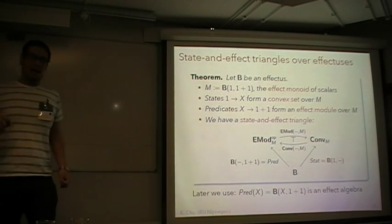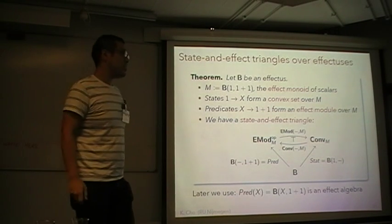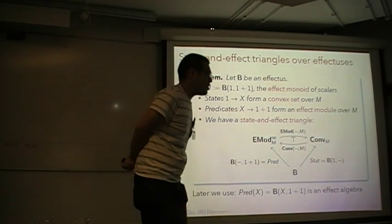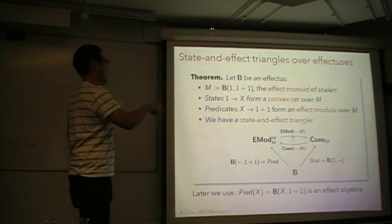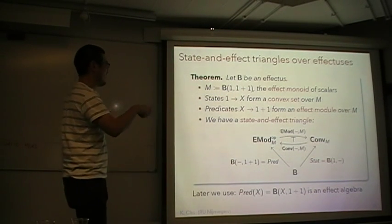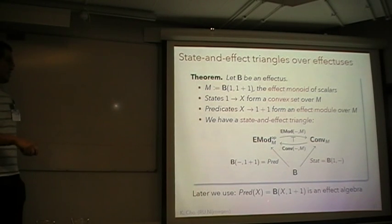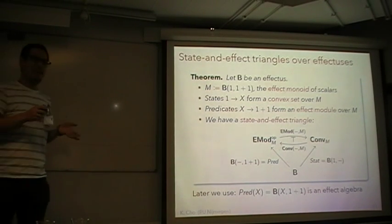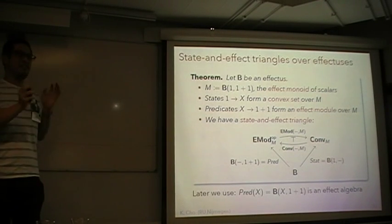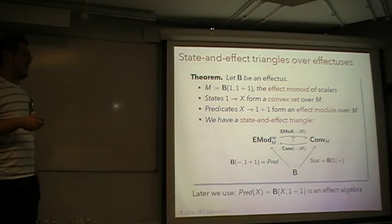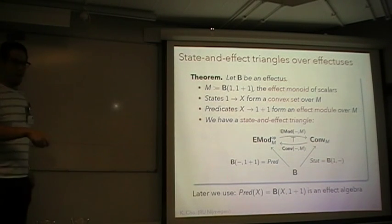How do you define the scalars? The scalars M are arrows from one to one plus one — so this is the set of scalars. Later we use the fact that the set of predicates forms an effect algebra, so we don't need the full scalar multiplication or modular structure. Please keep that in mind.